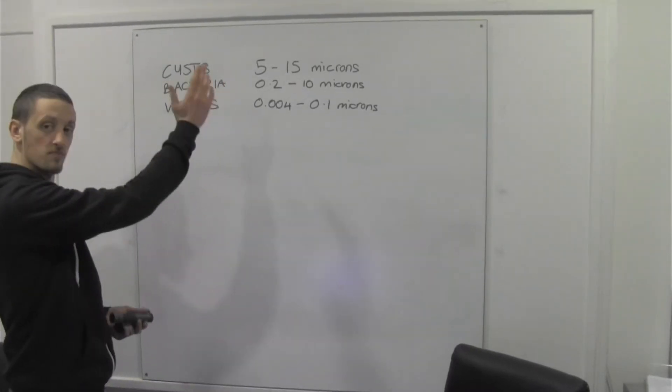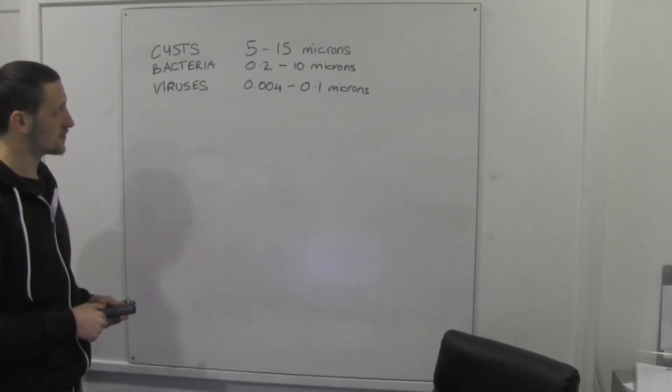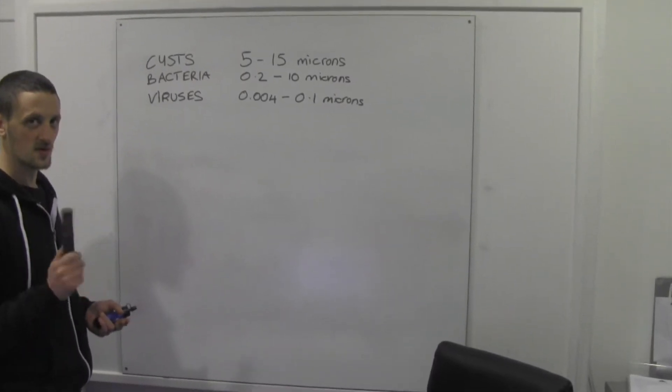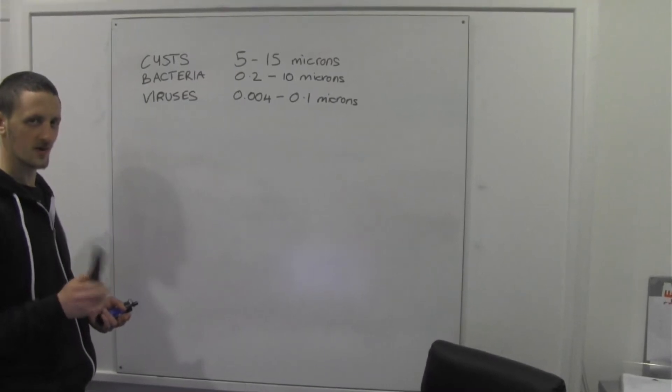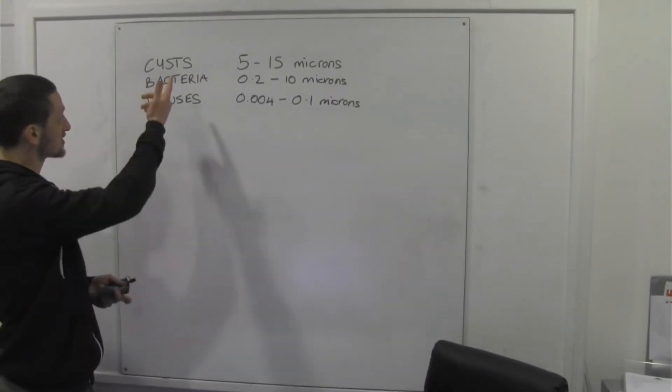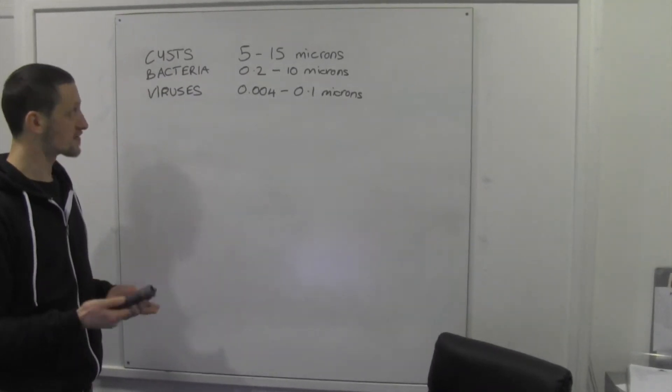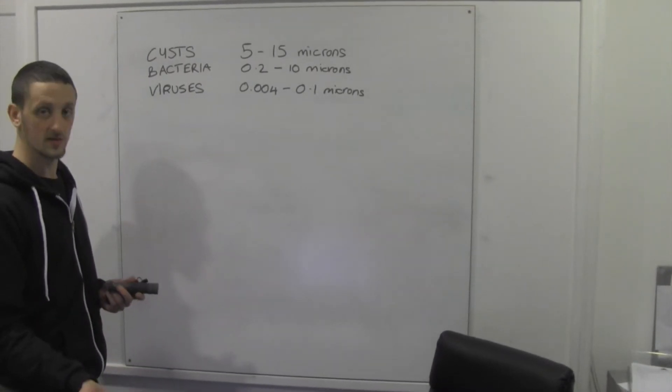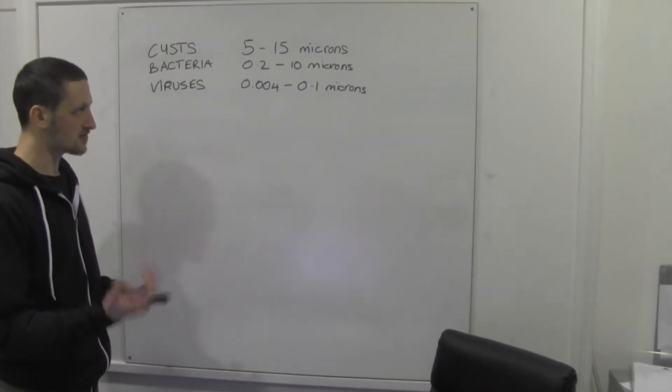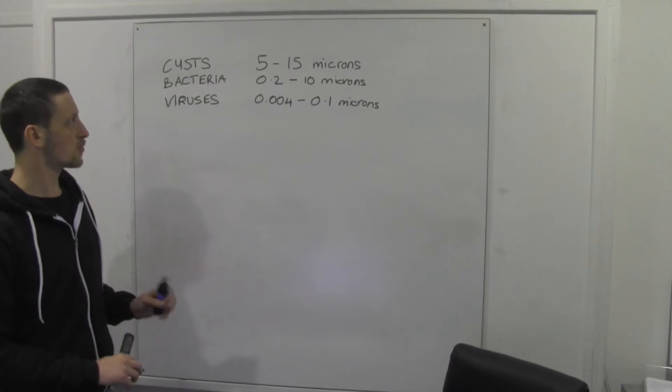On here, I've just got the microns. So it's different sizes of the different nasties you'll come across. One micron is basically a millionth of a meter. So a full stop on your computer screen is probably around 500 microns I think. Depends on your computer, but you get the gist. Okay, so you've got cysts. Massive, hard-shelled. If you drink from still water, then they're probably going to have sunk to the bottom. If you're drinking from flowing water, then a bit more likely they're going to have been stirred up and be there.